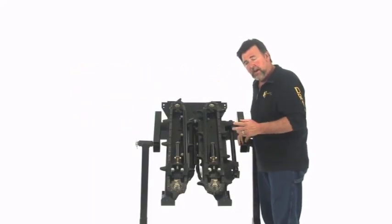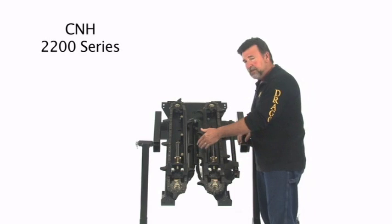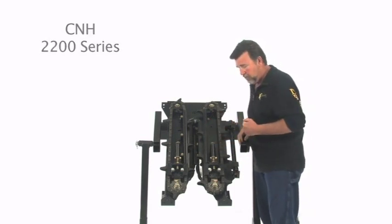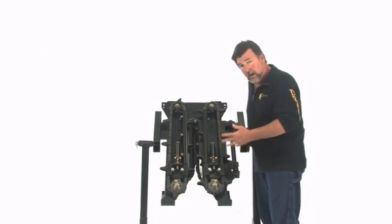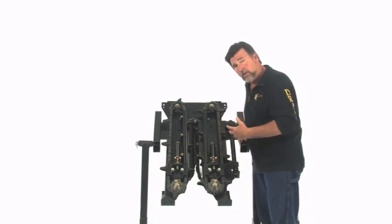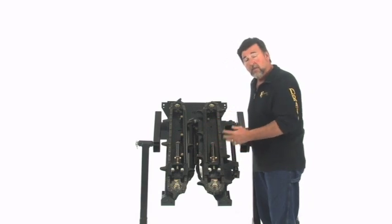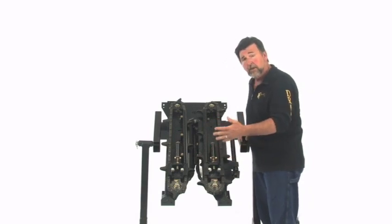Next on our list to discuss from Case New Holland is the 22 series corn head, or this is their row unit for it. This corn head is not offered anymore, but we want to talk about it because there are a lot of used ones out there that compete against maybe a used Drago.